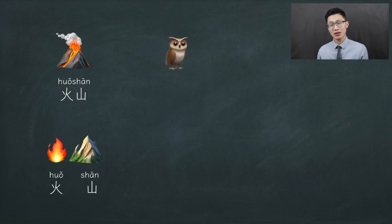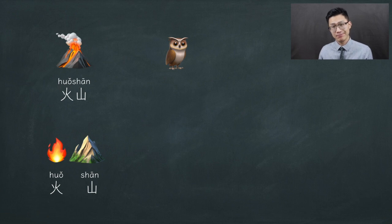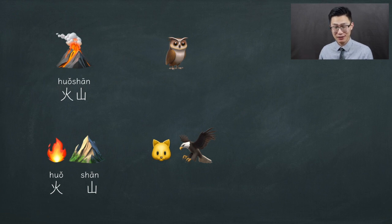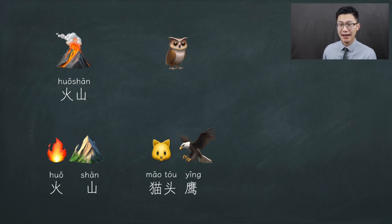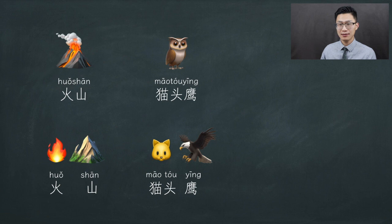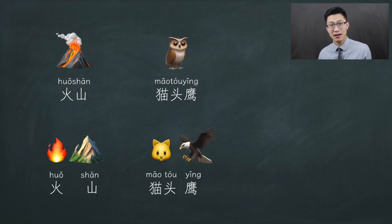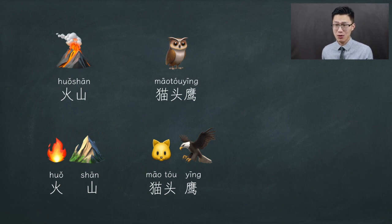And one day, you saw an owl. What word will you create for owl in Chinese? It's a hawk, but with a lovely cat head face. So cat is mao, head is tou — cat head, mao tou — and hawk is ying. So here you go: mao tou ying — an owl. It's simple; we don't even need to find new characters for a different animal. Just use cat and hawk, and we got the owl.